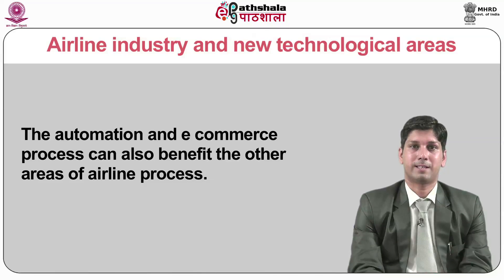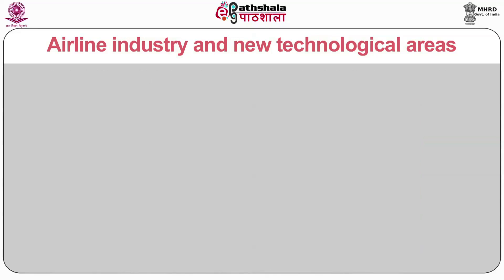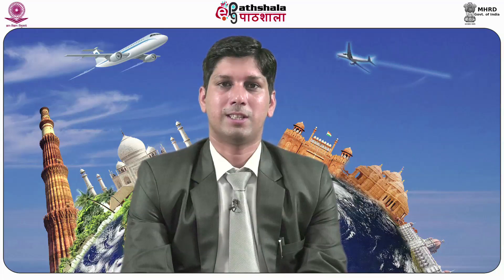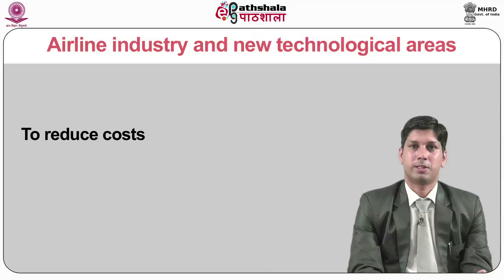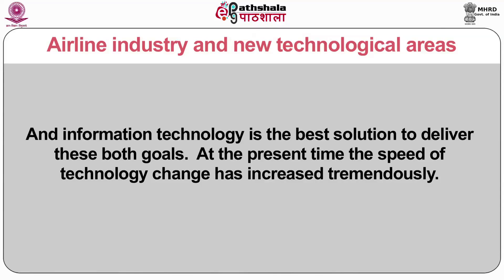The automation and e-commerce process can also benefit other areas of the airline process. Airlines working at present require streamlined and rapid communication with business stakeholders. Internet technology has been recognized as a major enabler for aviation to work effectively and efficiently. The aviation industry works for achieving sustainable cost-saving goals. Information technology and internet plays a critical role in determining how different airlines compete with each other. At present, the air carriers have two main strategic goals: to reduce cost and to get closer to consumers — and information technology is the best solution to deliver both these goals.